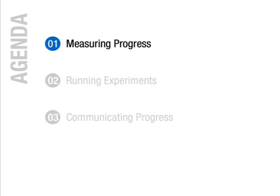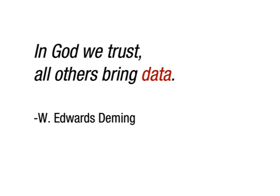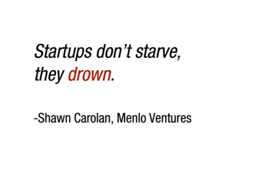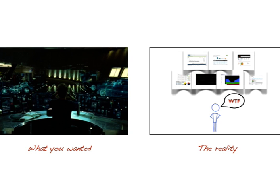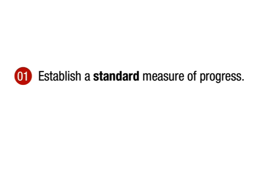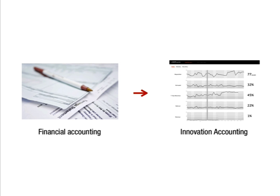So let's get started with how we measure progress. When you first launch a product, lots of things can and do go wrong. The common tendency is to want to collect as much data as possible. But in today's world, where we can measure almost anything, we often end up drowning in a sea of information. This is what we expect from our metrics dashboard, but this is what reality really looks like. We don't really need more numbers, but rather a standard measure of progress. Much like we have standard financial statements to measure established companies, we need a set of standard metrics to measure startups.